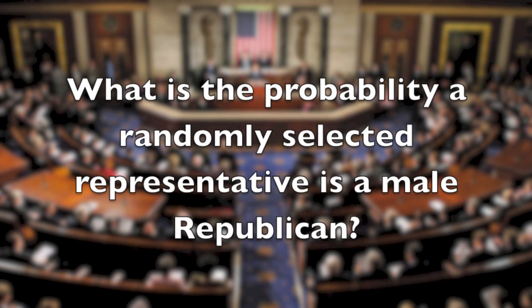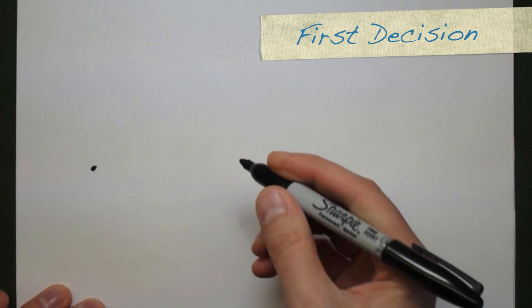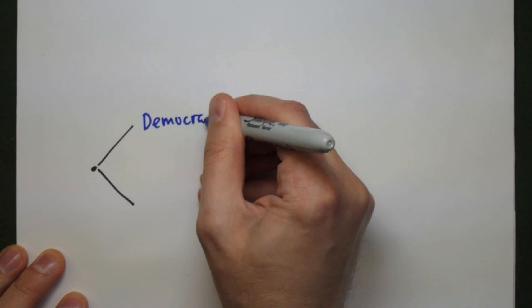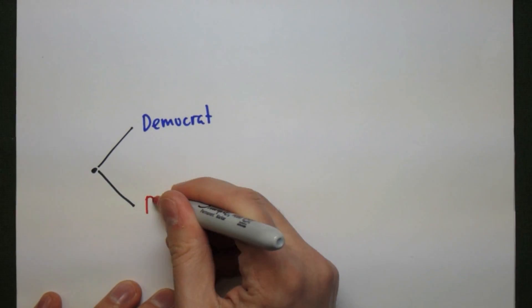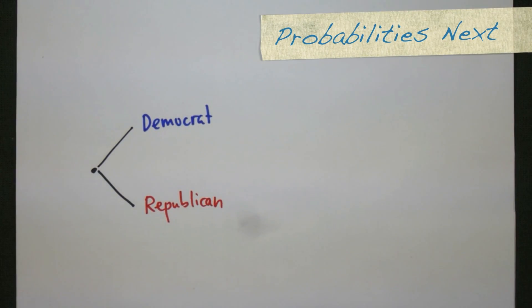What's the probability that a randomly selected representative is a male Republican? This problem by itself isn't that difficult, but it'll give us a way of using a tree and show you how it works. The first decision we have to make is whether the randomly selected person is either Democrat or Republican. They have to be one of these two, so they're going to fit into one of the two categories.